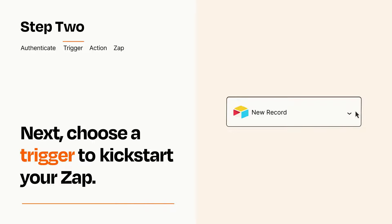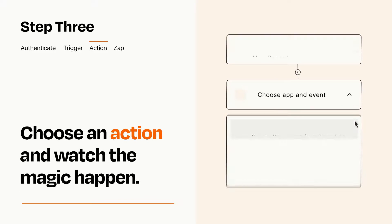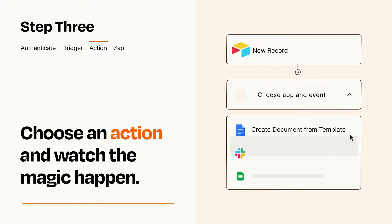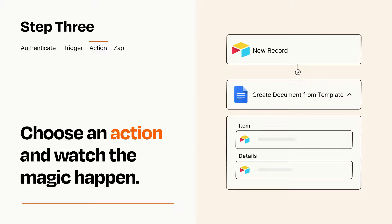This last part is where the magic happens. Choose the action you want to happen in your target app. You'll see a bunch of fields where you can specify the details of your Zap. You can type free form text or pull data in from your trigger step as needed.